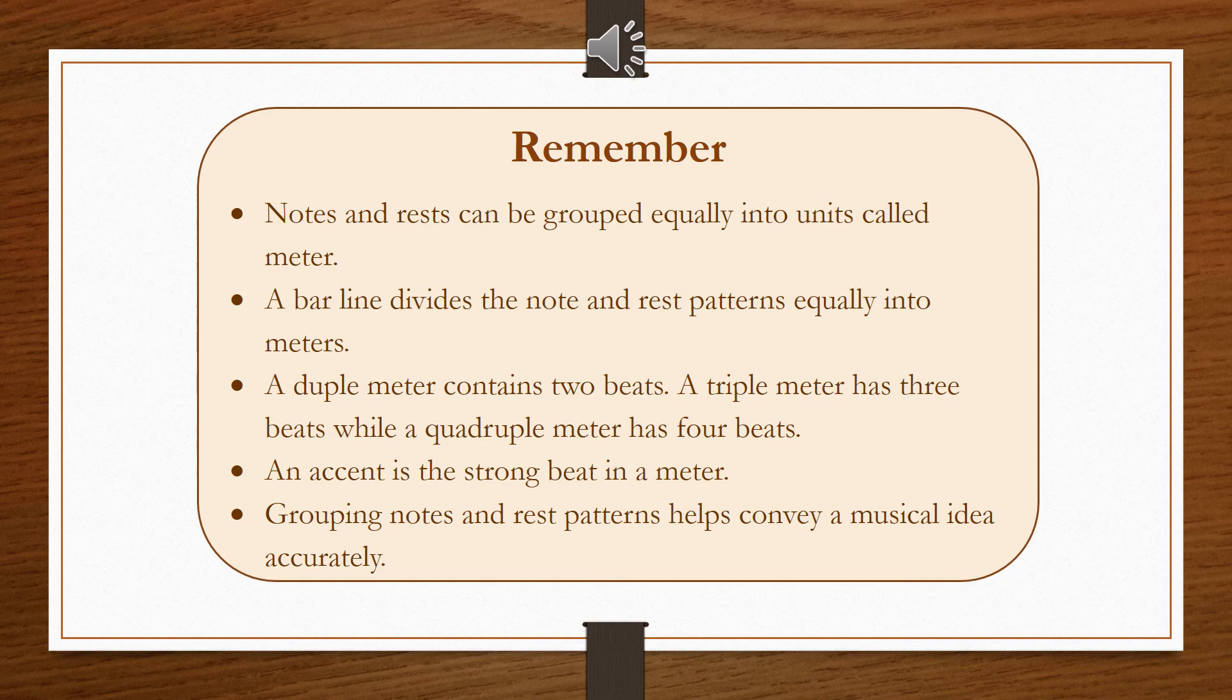A duple meter contains two beats. A triple meter has three beats while a quadruple meter has four beats. An accent is the strong beat in a meter. Grouping notes and rest patterns helps convey a musical idea accurately.